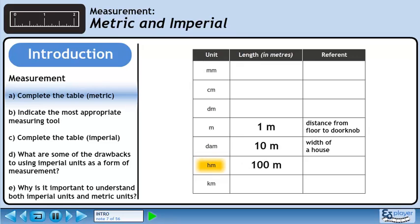Next, we have the hectometer, which is 100 meters. A referent for the hectometer is the length of a football field.